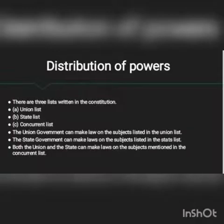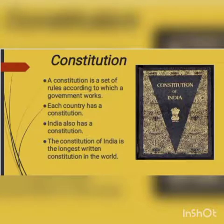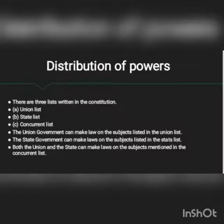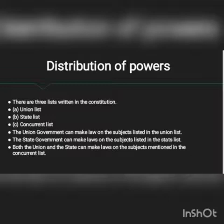Distribution of powers: There are three lists written in the constitution. The constitution is a book of basic laws according to which a country is governed. These three lists are the union list, the state list, and the concurrent list. The union government can make laws on the subjects listed in the union list. The state government can make laws on the subjects listed in the state list. Both the union and the state government can make laws on the subjects mentioned in the concurrent list.